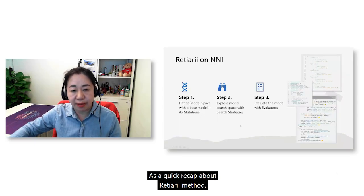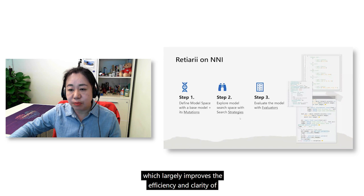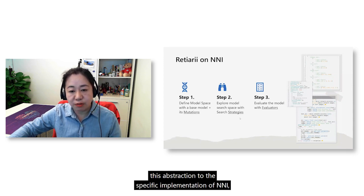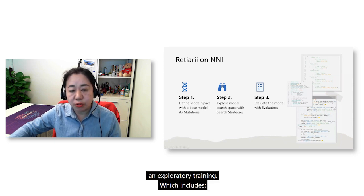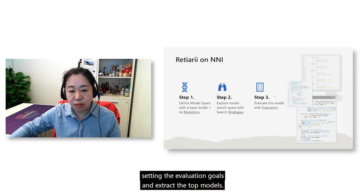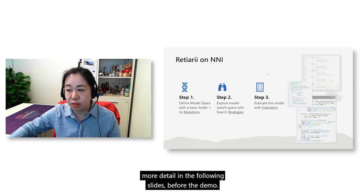As a quick recap about the ReShari method, ReShari has decoupled model space from model exploration strategy, which largely improves the efficiency and clarity of training explorations. Reflecting this abstraction to NNI's implementation, we defined a simple process with only three steps: defining a base model and adding its mutations, bundling search strategies and exploring the search space, and setting the evaluation goals and extracting the top models.